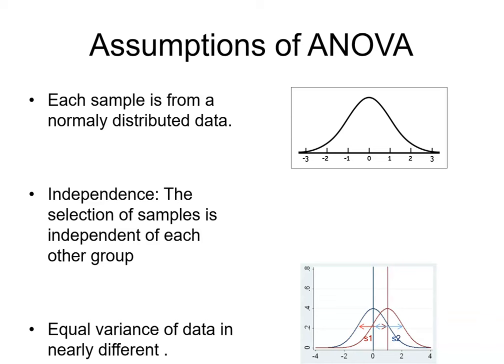And the third important assumption is that the variances of each of these groups are equal or it can be assumed nearly equal, because in a practical scenario it will vary slightly but in an ideal scenario it will be equal. So these are the three important assumptions of ANOVA.